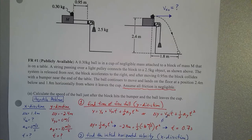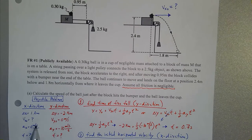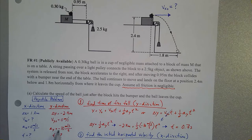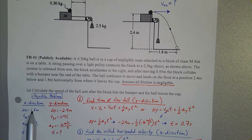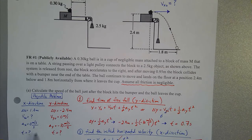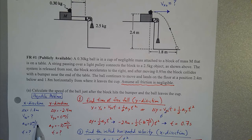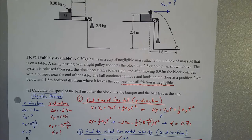Whenever we have a two-dimensional projectile problem, think about each part of the motion separately — the horizontal x direction and the vertical y direction. While the ball flies through the air after hitting the bumper, its horizontal change in position delta x is 1.8 meters, and we're trying to find its initial horizontal velocity. With friction negligible, the object doesn't change its horizontal speed, so acceleration in the x direction is 0. We don't yet know the time in the air.